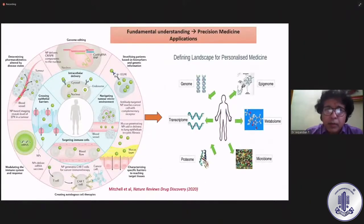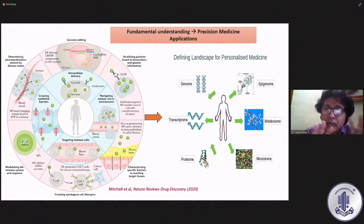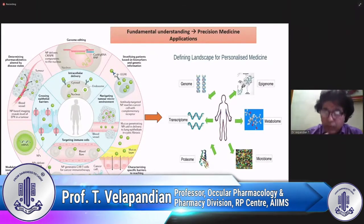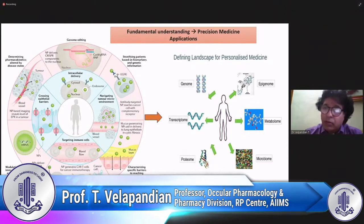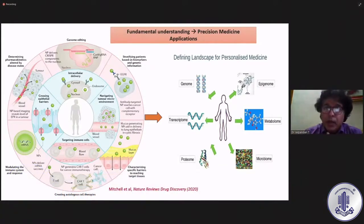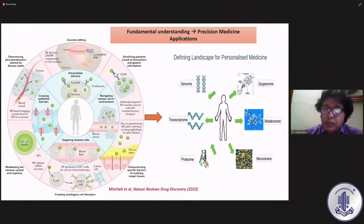When you look at personalized medicine from the cancer perspective, there are different approaches to individualize drug therapy: altering pharmacokinetics of drugs, disease state and genome editing, gene therapy, stratifying patients based on biomarker genetic information — as Professor Namrata has talked about — or characterizing specific barriers to reach target tissues.